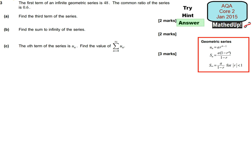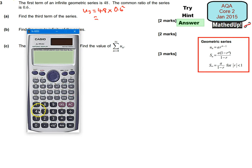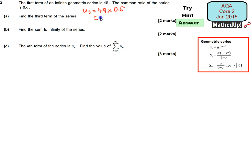I'm now going to go over the full answer to this question. So for part A to find the third term of the series, I know that UN is equal to AR to the N minus 1. So U3, my third term, is going to be equal to A which is 48 times R which is 0.6 to the power of N minus 1. 3 minus 1 is 2. So it's going to be 48 times 0.6 squared. So my third term is going to be equal to 48 times 0.6 squared and that gives me 17.28. So that's going to be my third term.